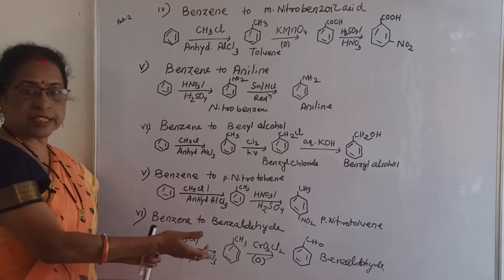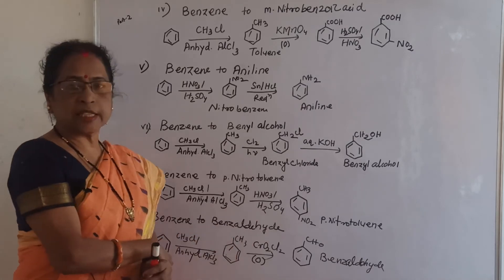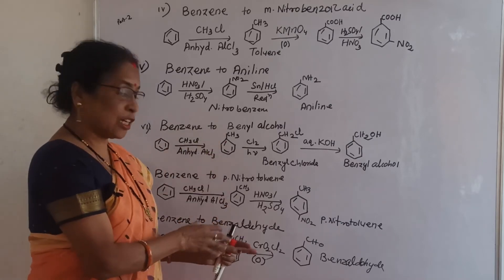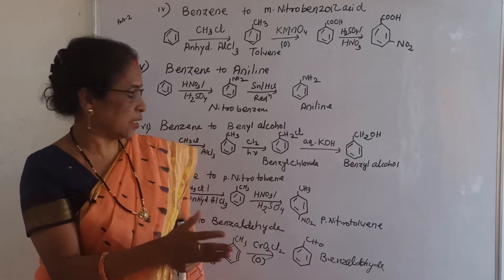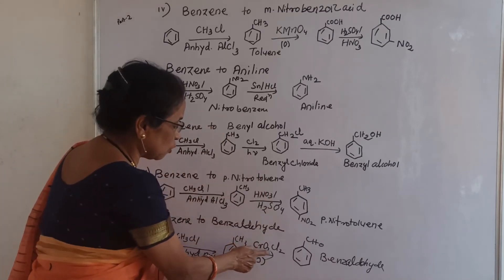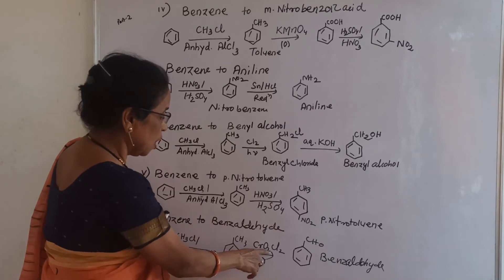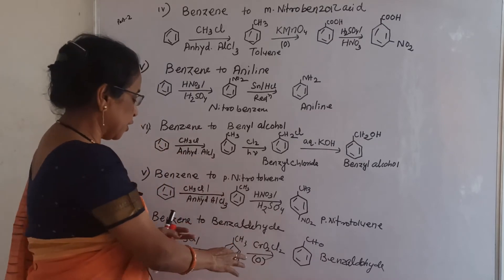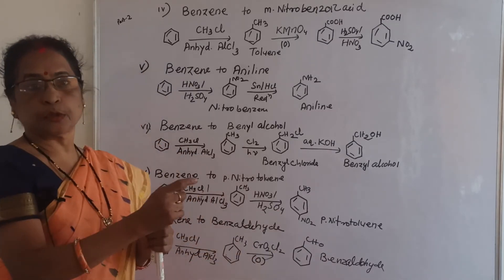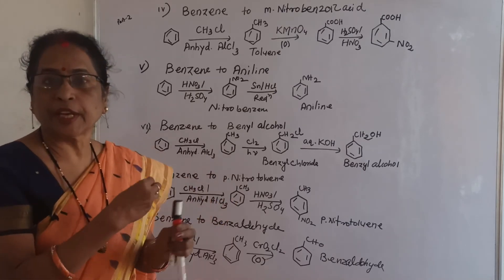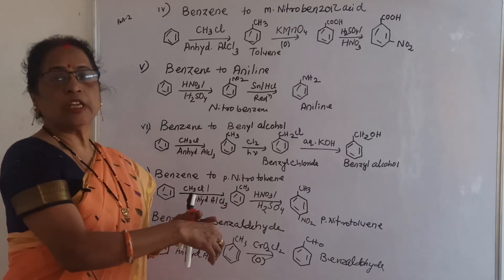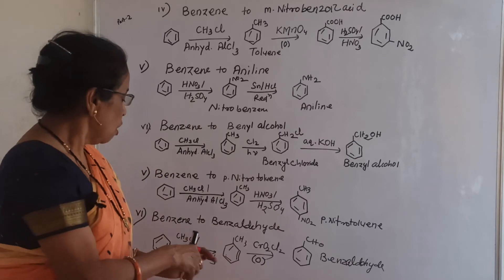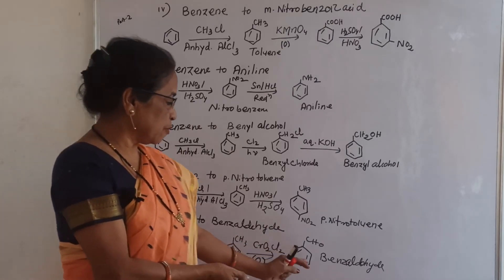Benzene to benzaldehyde: convert benzene to toluene using CH3Cl and anhydrous AlCl3. If you use KMnO4 oxidation, you would get benzoic acid — but the question requires only the aldehyde. To prevent further oxidation, treat with CrO2Cl2 instead. CrO2Cl2 stops oxidation at the aldehyde stage and gives benzaldehyde. If KMnO4 were used, it would oxidize all the way to benzoic acid.